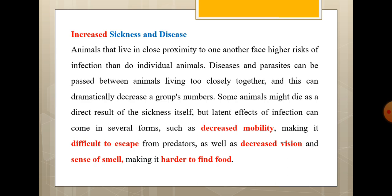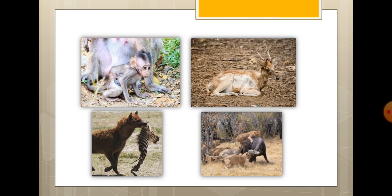When disease weakens an animal and its mobility has decreased, if a predator is after that animal it becomes very difficult for it to escape. Vision is diminished, and it becomes very difficult to find food because of decreased vision and sense of smell. So diseased animals become very susceptible to predators and are very easily caught and preyed upon.